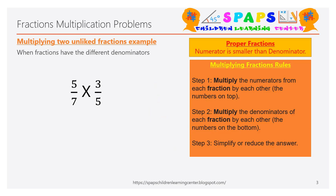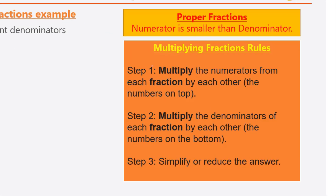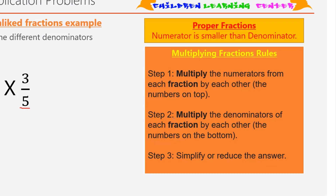Unlike fractions means fractions that have different denominators. Here seven and five are not the same, that's why this example has two unlike fractions. The multiplication rule is the same: the numerators need to multiply each other, and the two denominators need to multiply each other.